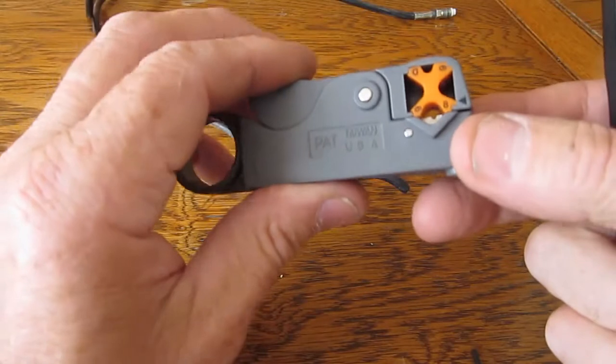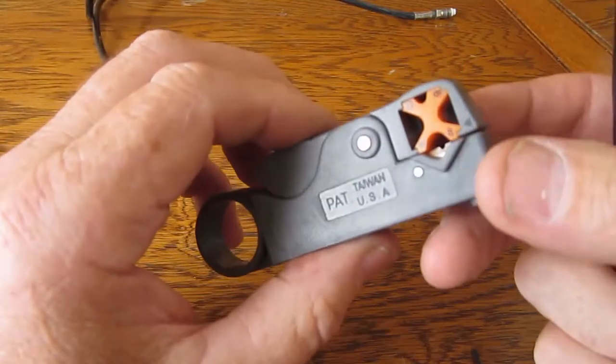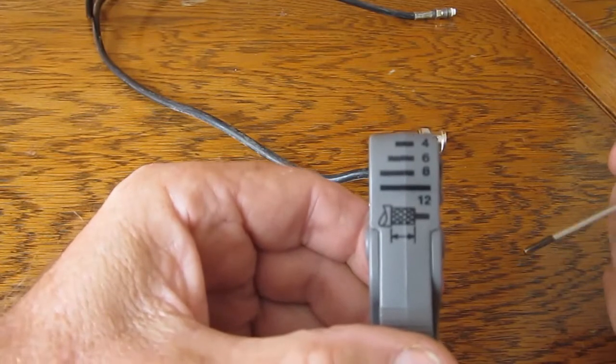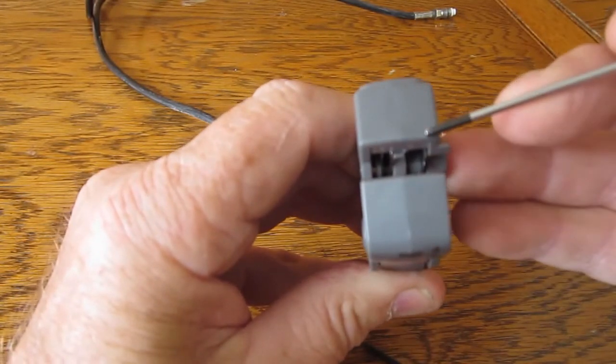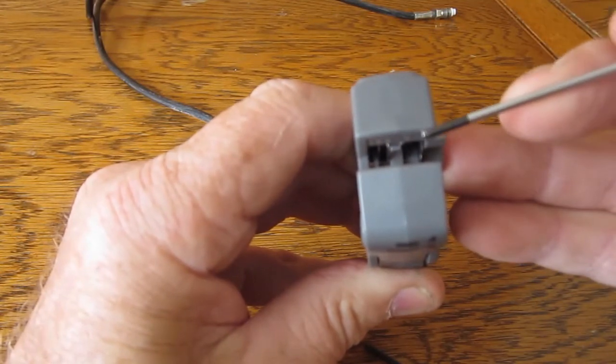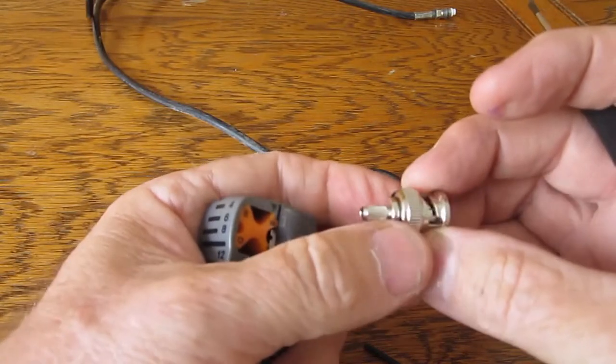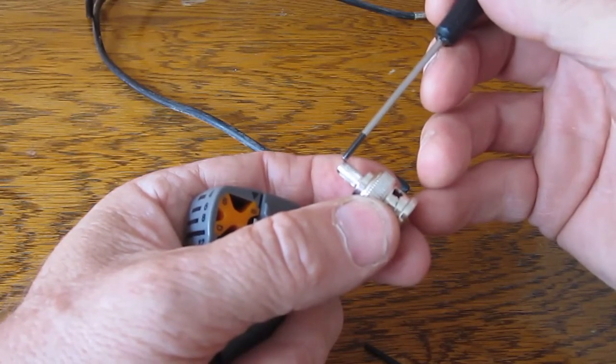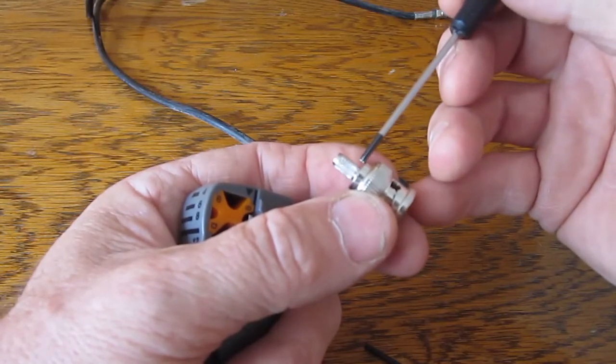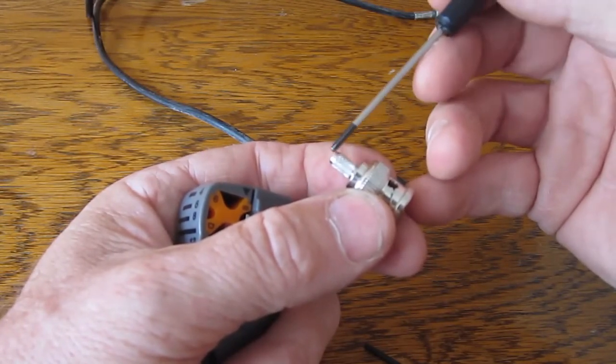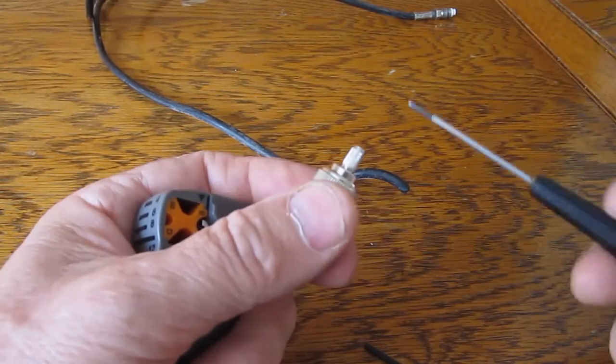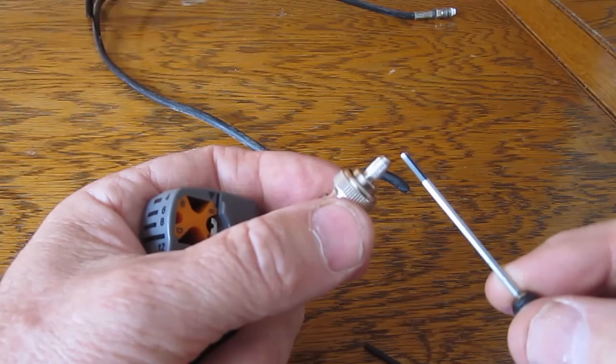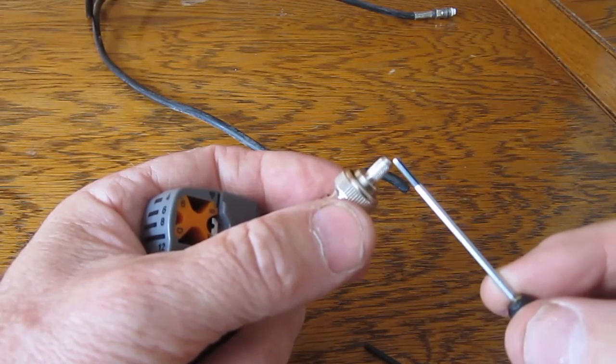Now before we actually get to setting depths, the other thing we need to do is set the separation of the jaws down in here. The separation that we require is the length here between the end of the connector and this shoulder, because what we're attempting to do is strip the outer portion of the coax cable. So we need to know roughly what that dimension is between there and there before we start that setup process.